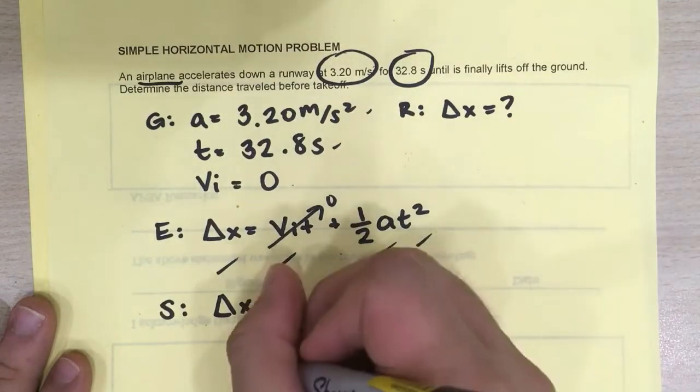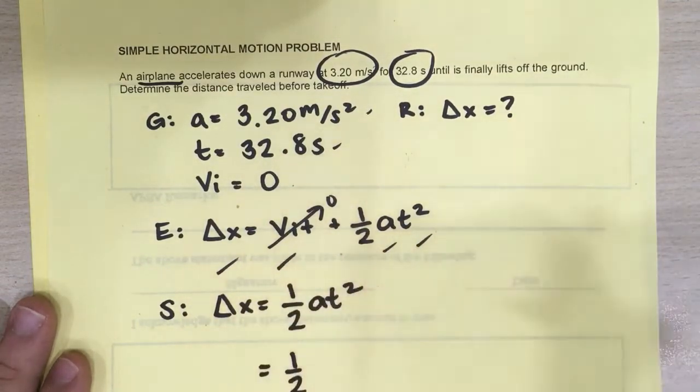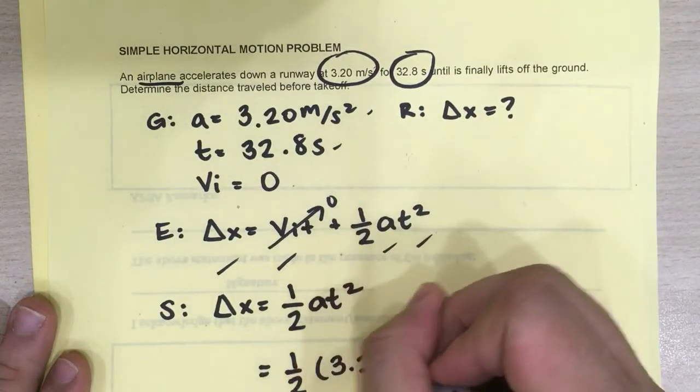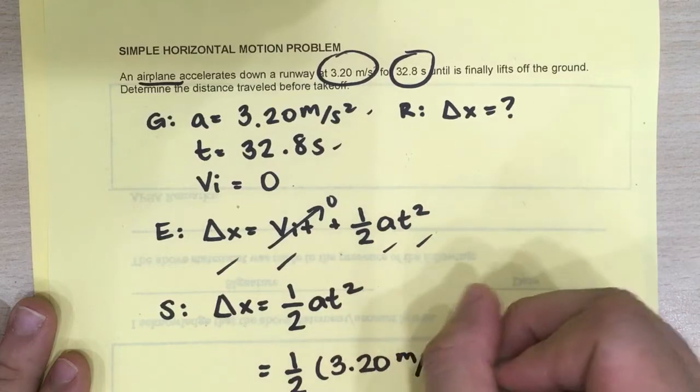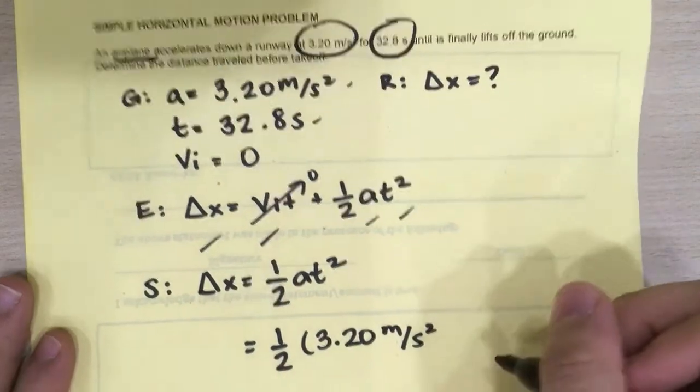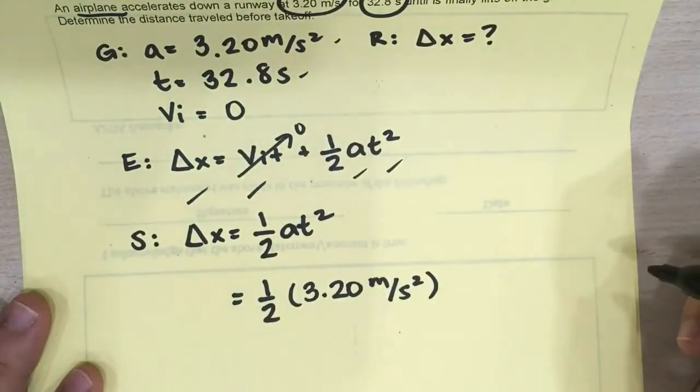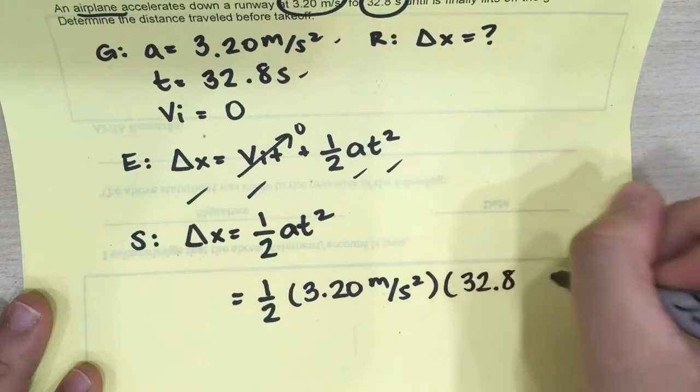Okay, we're looking for delta X, one-half. What is a? A is 3.20 meters per second squared. Okay, what is your time? Your time is simply 32.8 seconds.